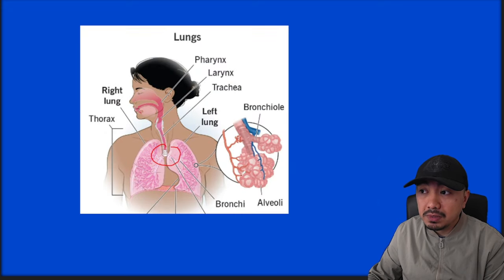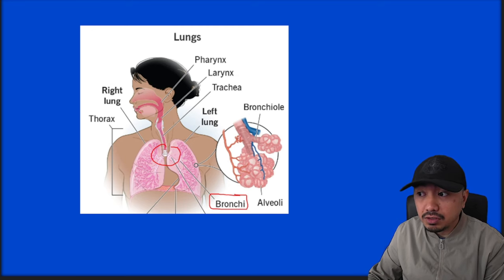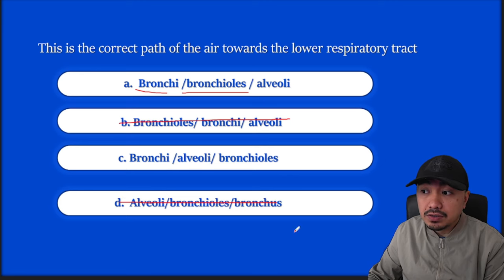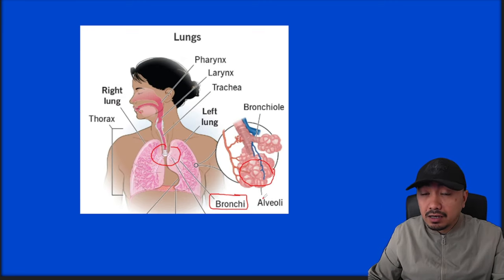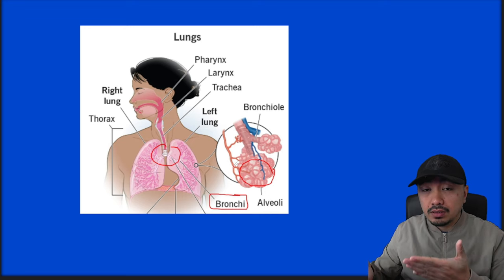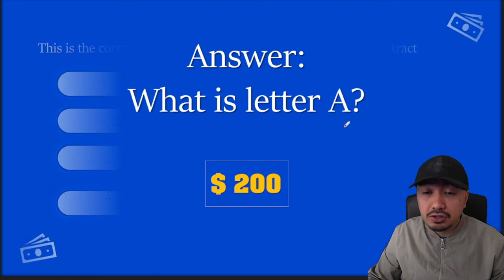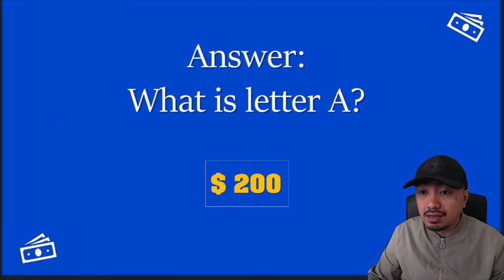We start first with the larger branches called your bronchi — that's the plural form of bronchus. Eliminate letter B because bronchioles are the smaller branches of your bronchi. Eliminate letter D because alveoli are the tiny air sacs located at the end portion of these branches, responsible for O2 and CO2 exchange. So the answer for this question is letter A. Congratulations on getting the first question correct.